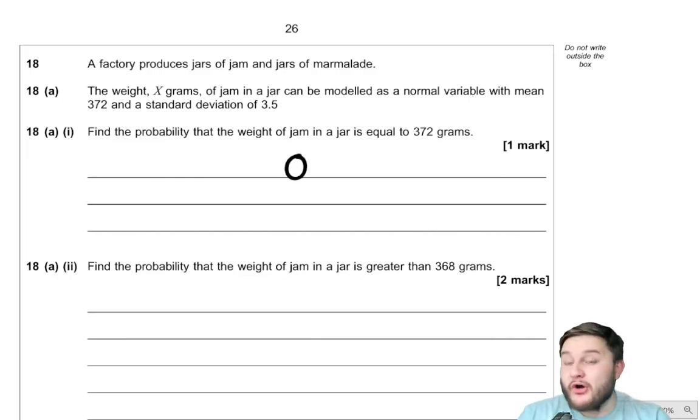Now, that doesn't mean it's impossible, because this is where we sort of move from GCSE to A-level of the realization that something being impossible and something being probability zero don't necessarily mean the same thing. Just because there are infinitely many weights that the jar of jam could be, it's probability zero.